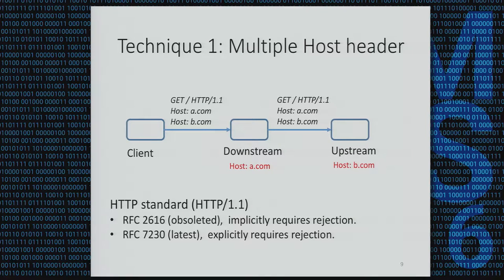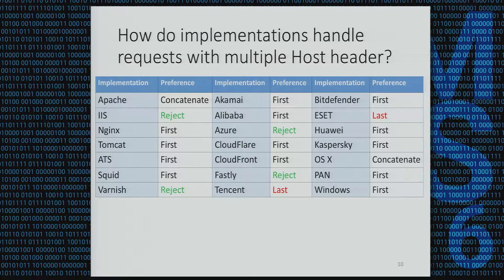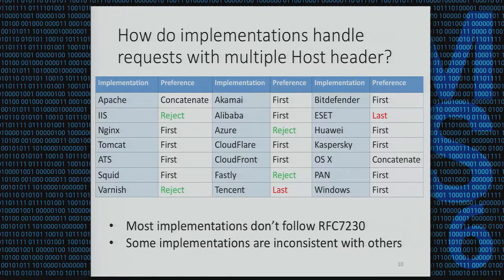Looking at the HTTP standard: the most popular version is HTTP 1.1, which has two RFCs. The older standard implicitly requires rejection of multiple host headers, and the latest RFC explicitly requires rejection. So the HTTP standard is clear. But how about implementations? We tested 33 implementations. Only a few, like IIS, reject multiple host headers. Most of them, like Nginx, accept the first host header. And some, like Tencent and ESET, accept the last host header. So most of them don't follow RFC, and some are inconsistent with others.